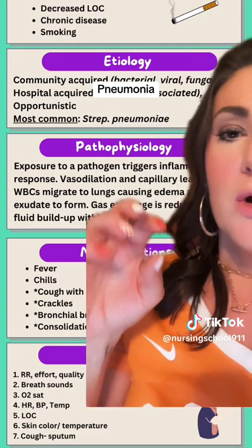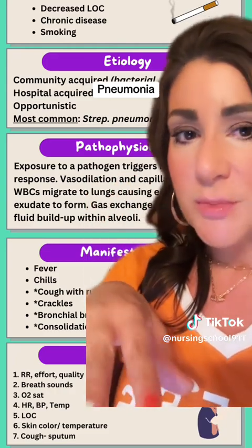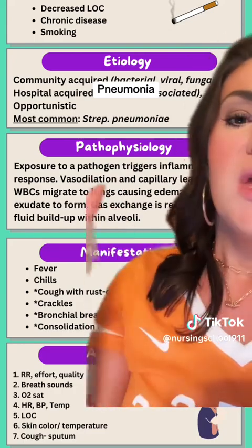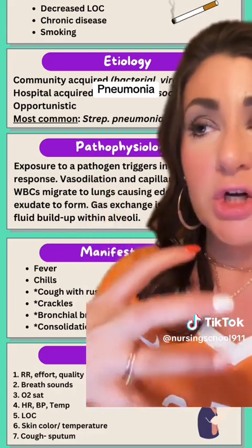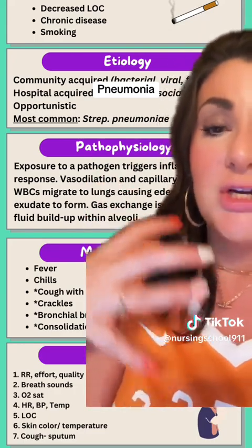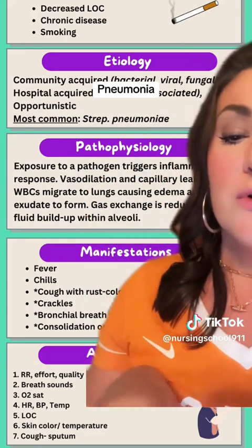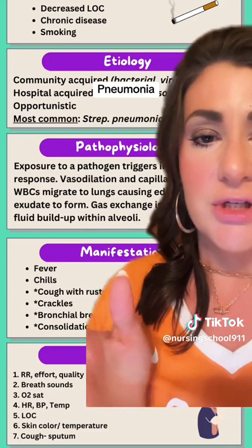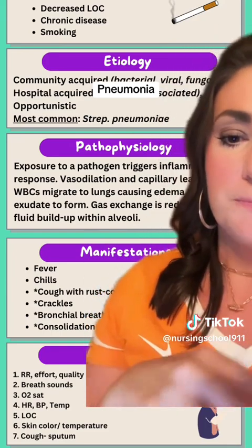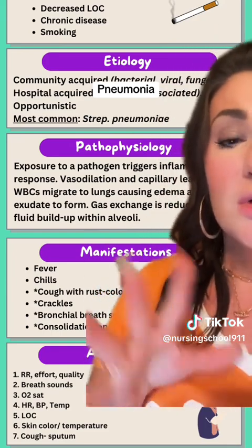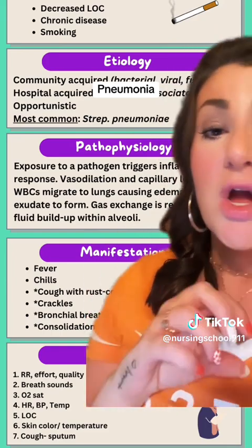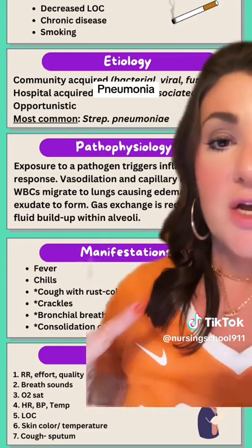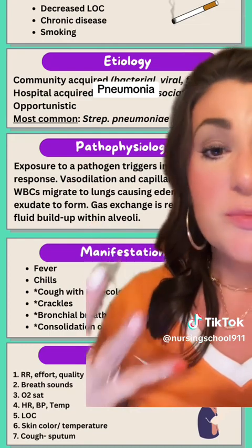Level of consciousness — why is this important? Well, these patients are at risk for respiratory acidosis, because all the fluid is possibly preventing a good full inhalation and exhalation. So level of consciousness is going to tell us a lot about their oxygenation as well as their ventilation. Skin color and temperature. We're going to look at the cough, ask them about a cough, and assess the appearance of any sputum that we see.